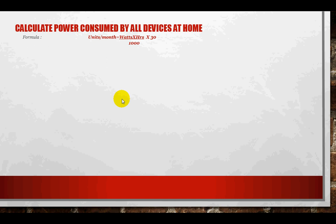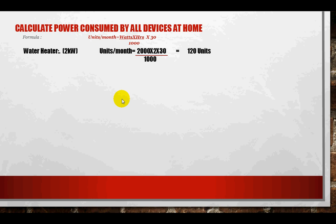Let us calculate the units for individual equipment. For the water heater, on any electrical device there will be a nameplate showing the power rating. For an electric heater, the rating is 2 kilowatts, which is 2000 watts. So: 2000 watts × 2 hours ÷ 1000 × 30 days = 120 units per month.